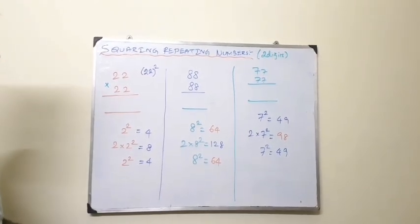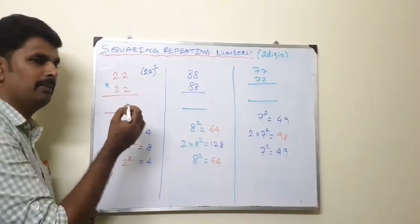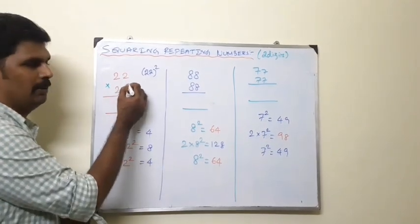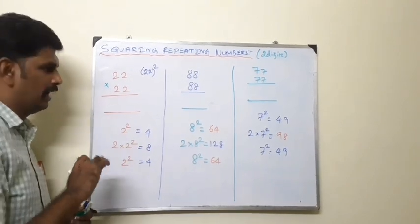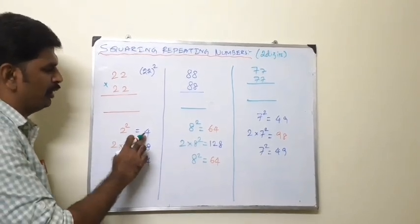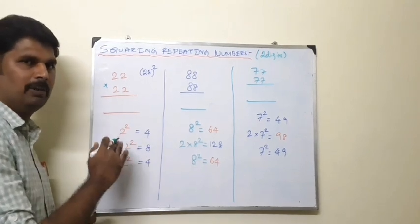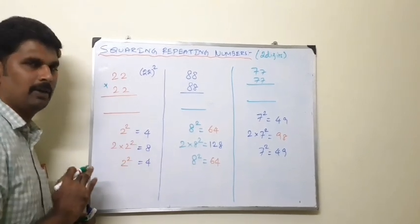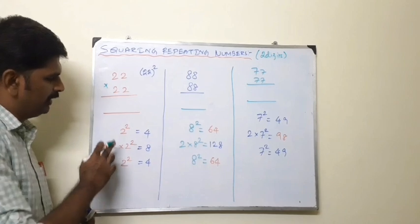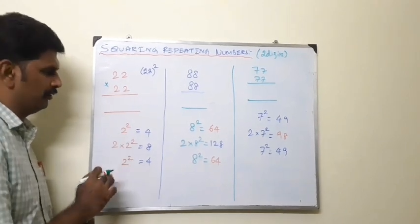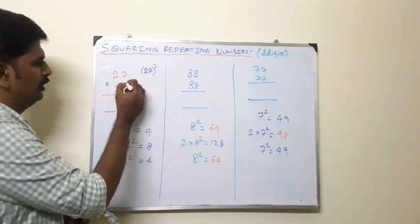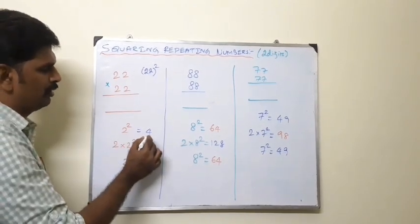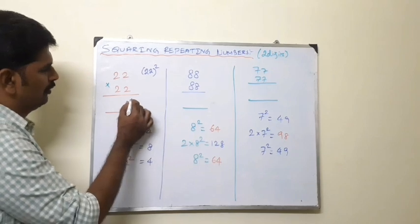First, we will multiply 2 into 2, which is 2 squared. What is the result of 2 squared? It's 4. Then we take double, which means 2 multiplied by 2 squared. So 2 squared is 4, and then 2 times 4 equals 8. Finally, we will multiply 2 squared again, which is 4.